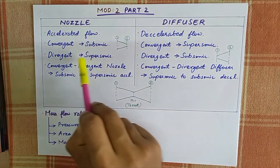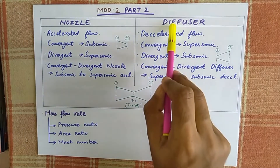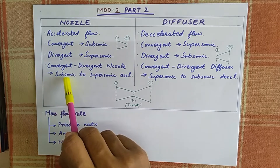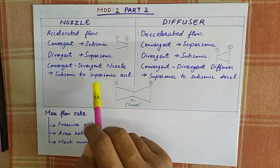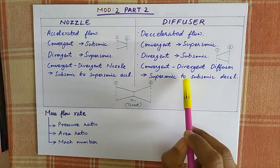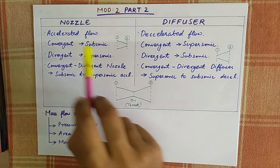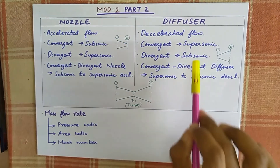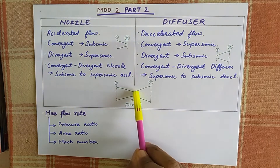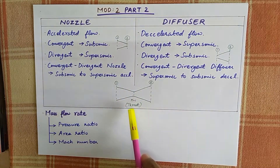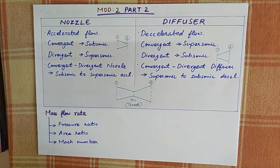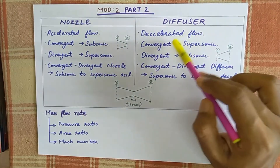The divergent nozzle is subsonic. The convergent-divergent nozzle provides subsonic to supersonic acceleration. The convergent-divergent diffuser provides subsonic to subsonic deceleration. We call it a convergent nozzle and a supersonic diffuser.